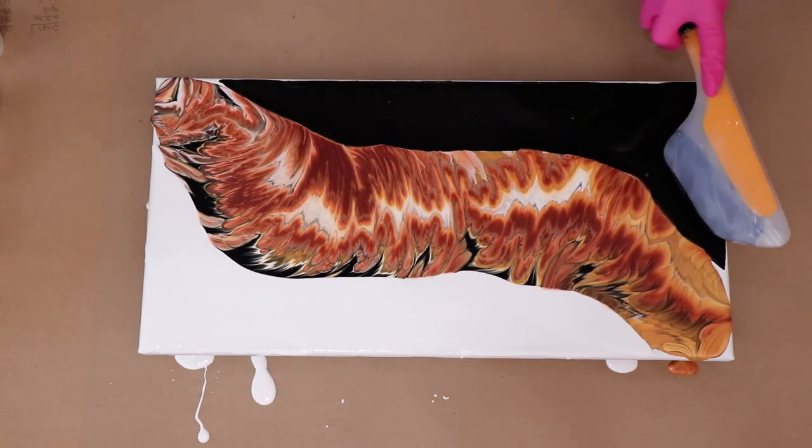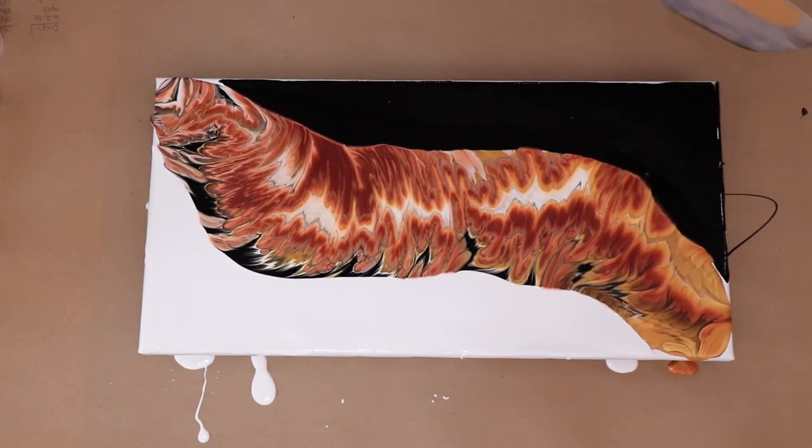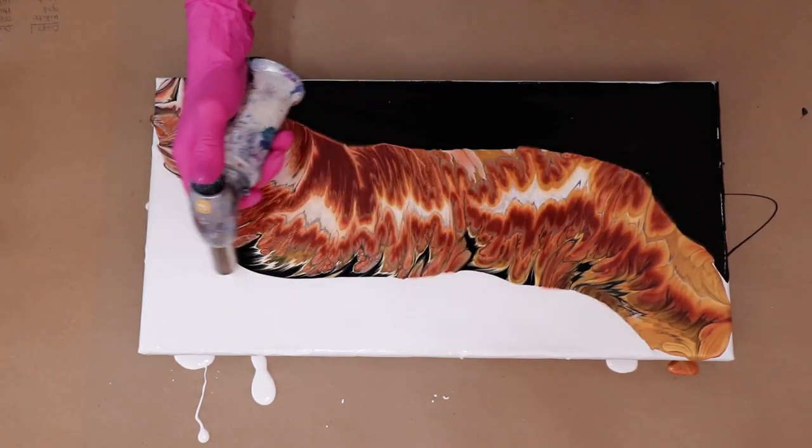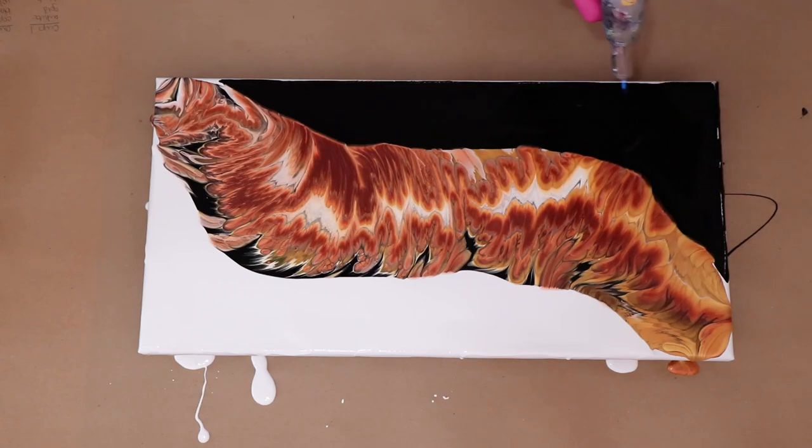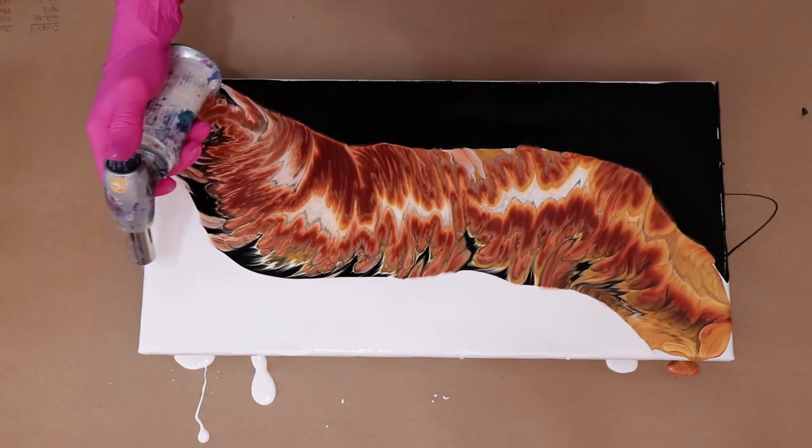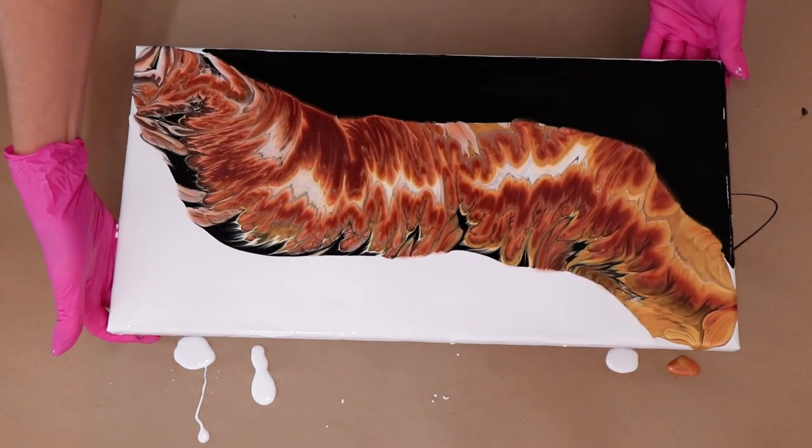It doesn't have to be perfect. Just get it covered there. When you use a spatula, a lot of times you get air bubbles. So I'm torching it to try to get those air bubbles out.